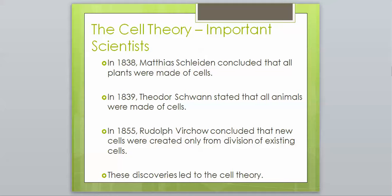In 1855, Rudolf Virchow concluded that new cells were created only from division of existing cells. That's one of those characteristics of life that we talked about. Being able to reproduce is a characteristic of life, and Virchow is the guy that came up with that. All of these discoveries together led to the cell theory.